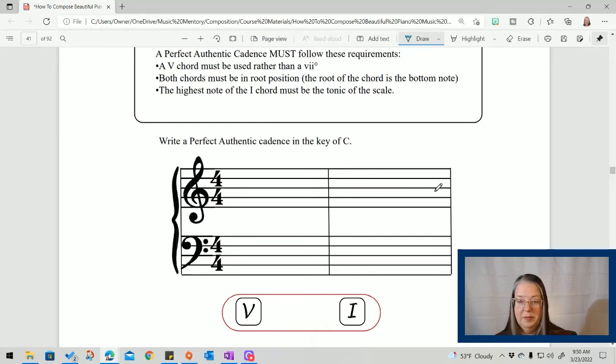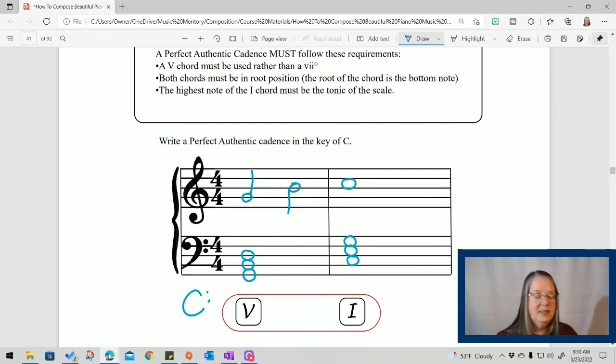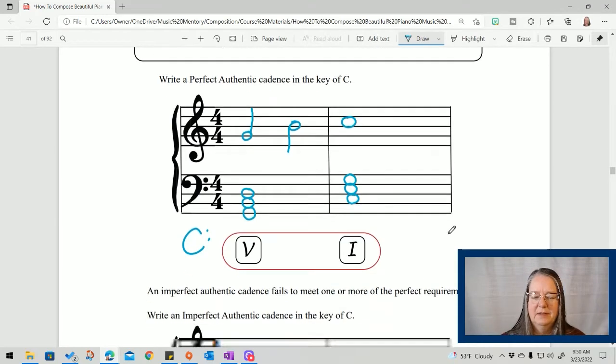Both chords have to be in root position. This one has to be a five. So it has to be a G on the bottom. G, B, D. And then it's going to go to a C with a C on the bottom because we're, as always in this workbook, in the key of C. And then the right hand, the melody can be pretty much the same. Okay. Let's see how that sounds. Sounds very good. Very perfect.